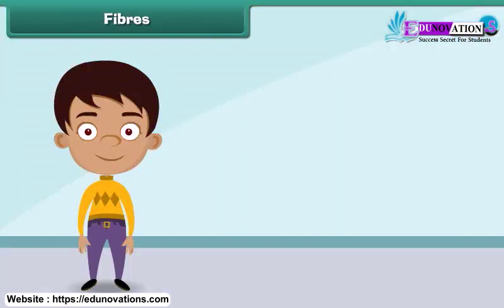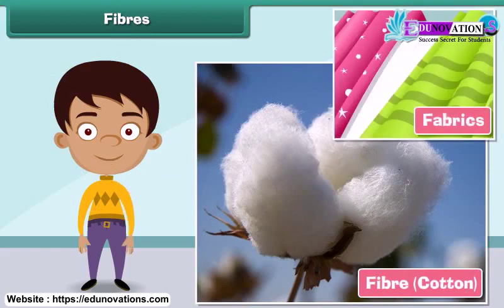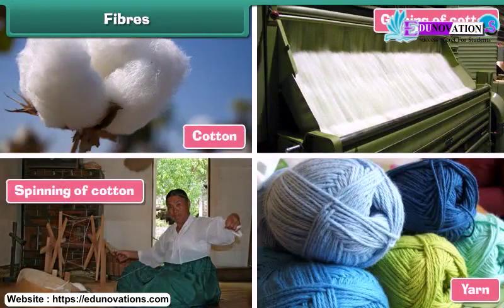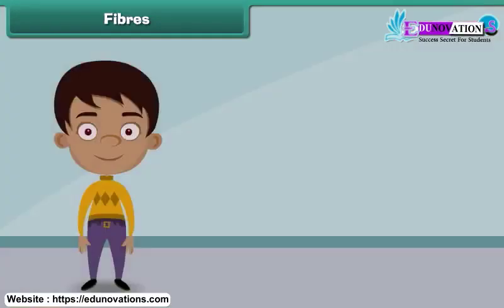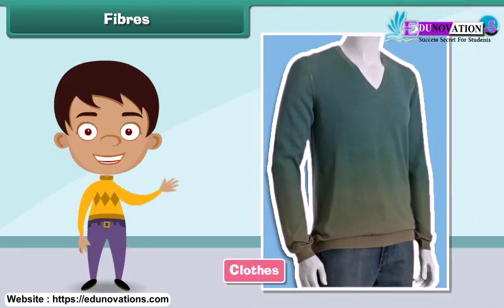Fibers are the raw material used in manufacturing clothes. Fibers are transformed into clothes through a series of steps. First, raw fibers are twisted together to form long strands of threads known as yarns. The yarns are then woven and knitted to form fabrics. Finally, fabrics are used to make clothes of different sizes and shapes to suit the needs of the people.